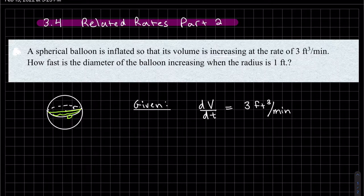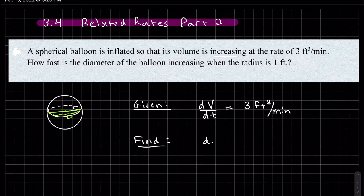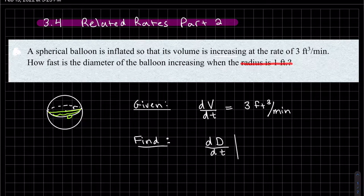Now we write the rate we want to find: how fast is the diameter of the balloon increasing? I'll use D for diameter rather than x or y, since it describes what we're measuring. I want to find dD/dt — the derivative of the diameter in terms of t — at the given instant when the radius is one foot.